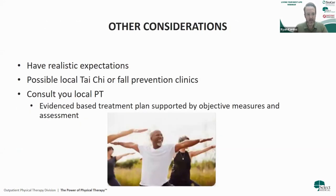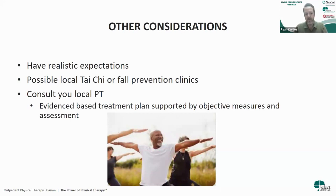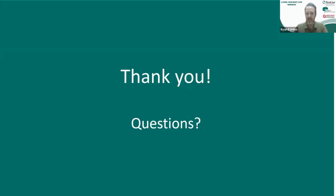Local libraries and senior centers often have Tai Chi, which is a great way to get your body moving if you're not sure about physical therapy. Having realistic expectations is important — let's focus on short-term goals like standing up from a chair without arms or balancing feet together with eyes closed for 30 seconds, then build from there. Consult your local PT for an evidence-based treatment plan supported by objective measures and assessment. Thank you so much for taking some time out of your night.